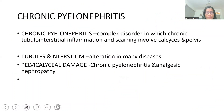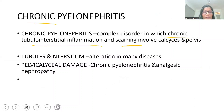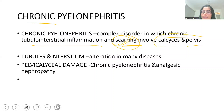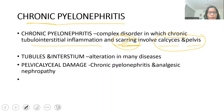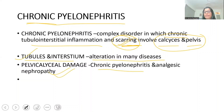Coming to chronic pyelonephritis — what is it? It is a complex disorder with chronic tubulo-interstitial inflammation and scarring. Scarring occurs because it is a chronic process, and fibrosis leads to scarring. Scarring involves the calyces and the pelvis. Involvement of the calyces and pelvis is the hallmark feature of chronic pyelonephritis. Pelvicalyceal damage is seen only in chronic pyelonephritis and analgesic nephropathy.